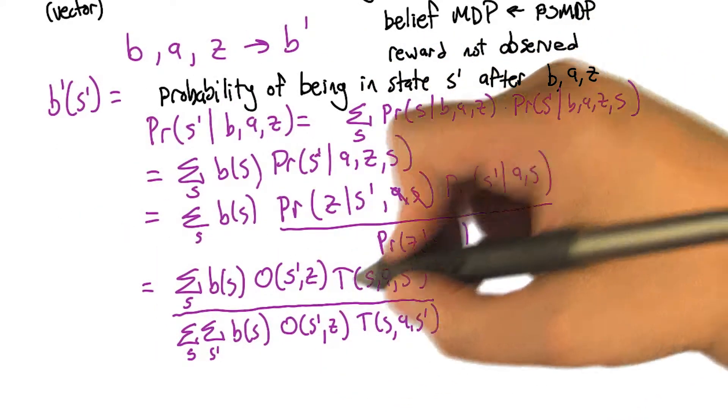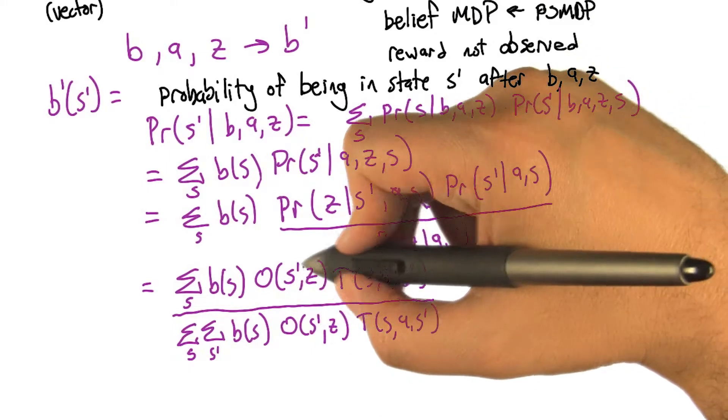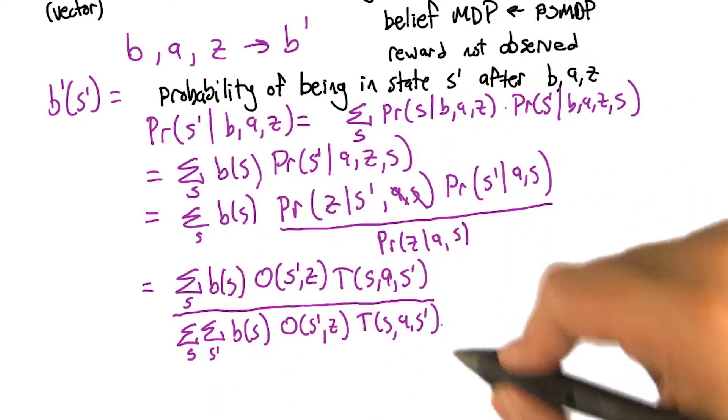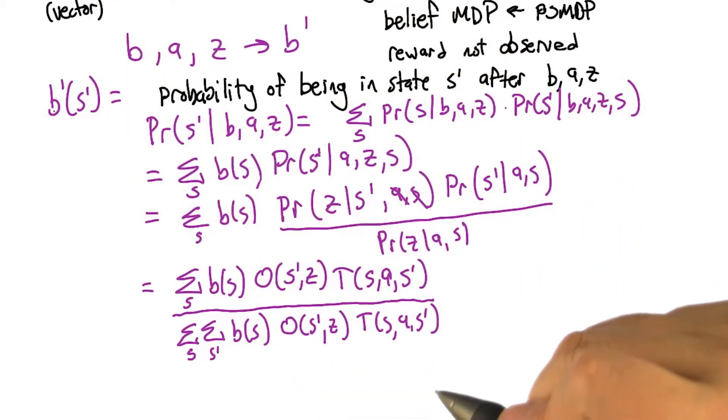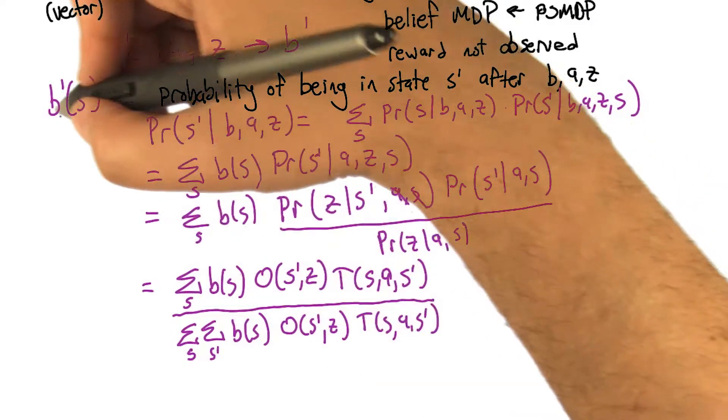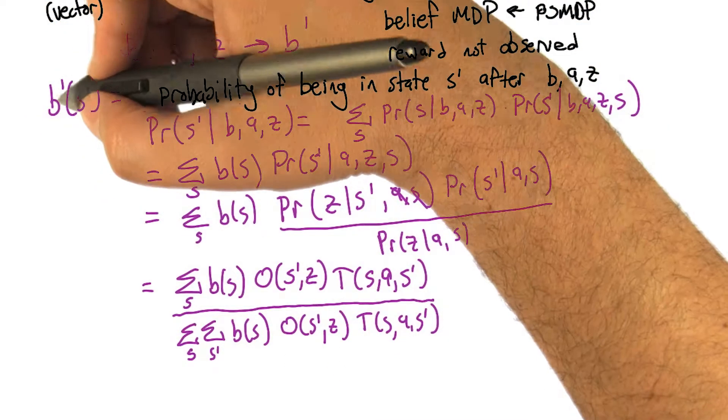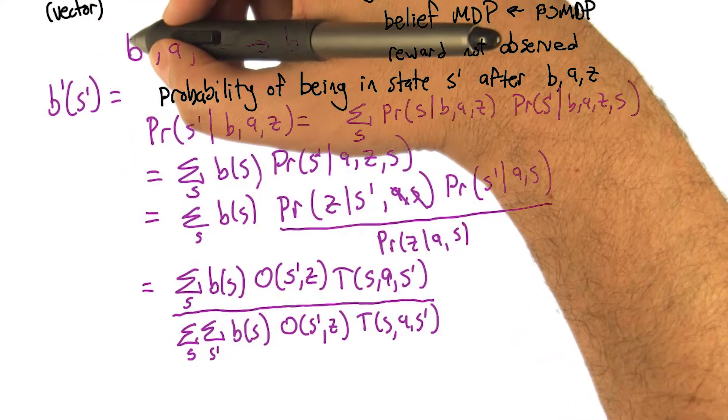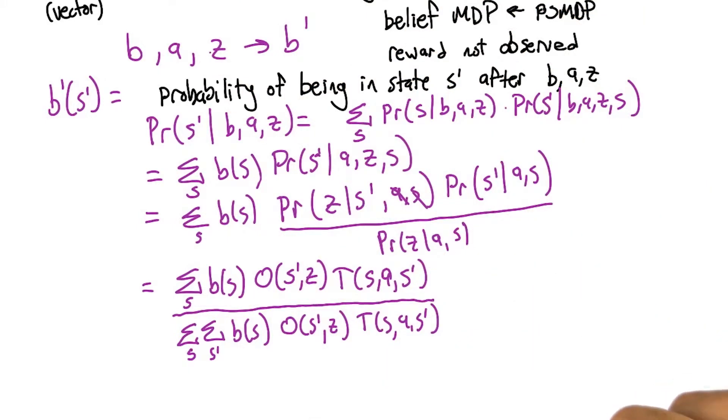So substituting those quantities in, and rewriting out this normalization factor, is basically the numerator divided by the sum of all the possible next states S-prime. We get one component of the new belief state B-prime. If we apply the same idea over all possible states S-prime, then we get a probability distribution over all the states. That represents the likelihood of being in those states, given that we were in belief state B, took action A, and made observation Z.